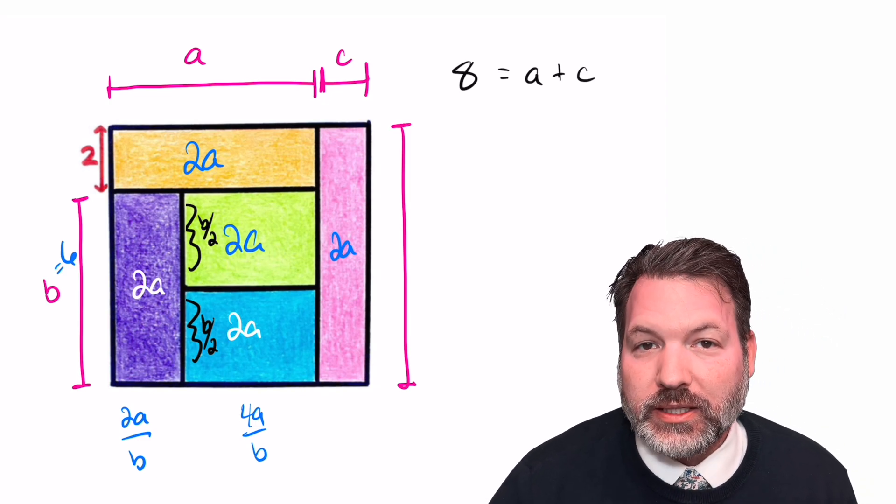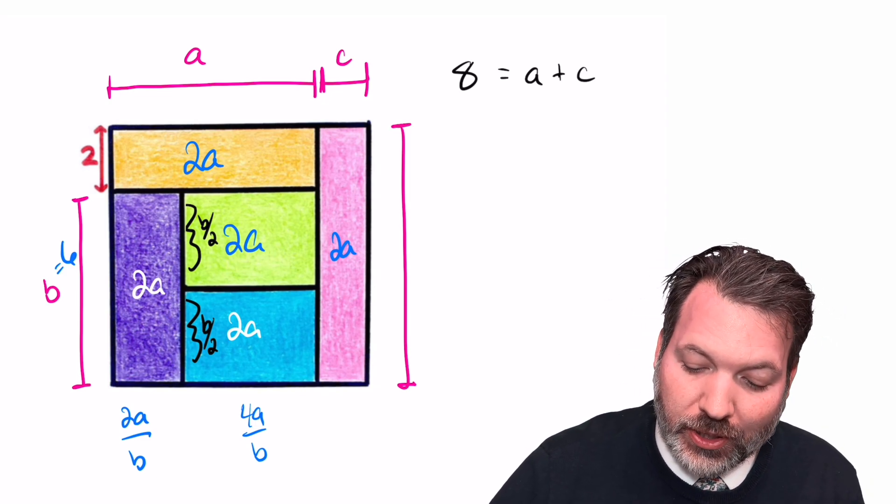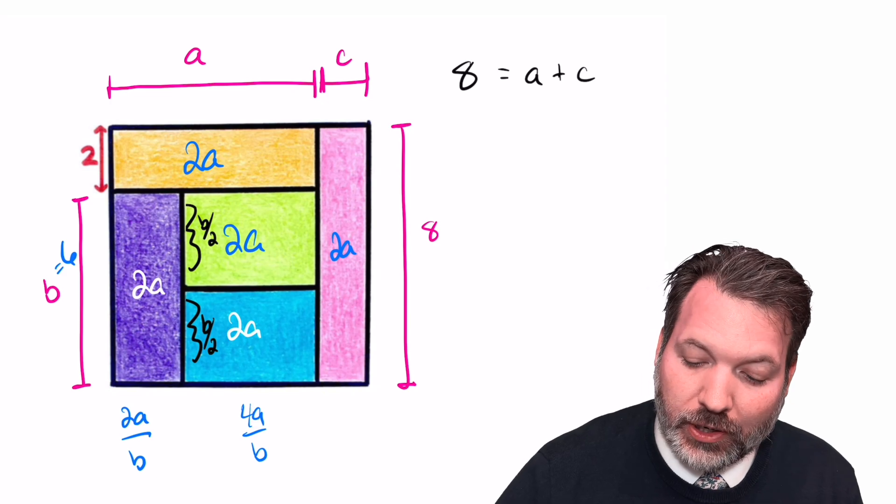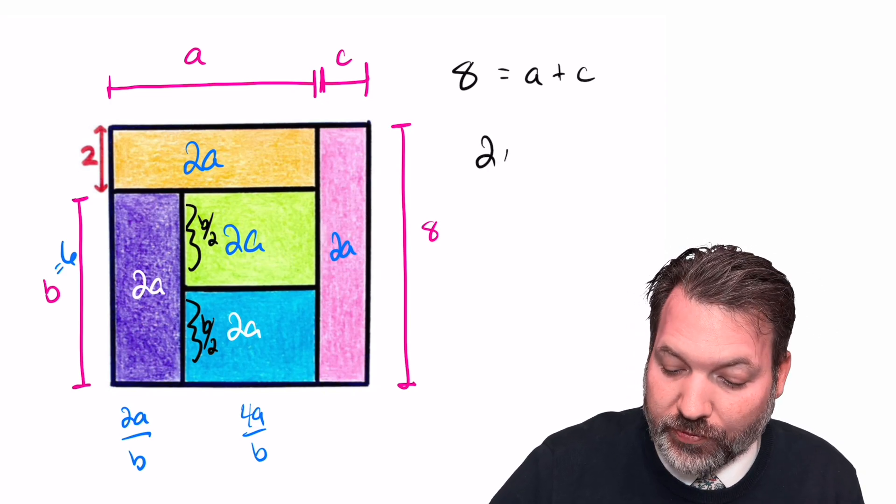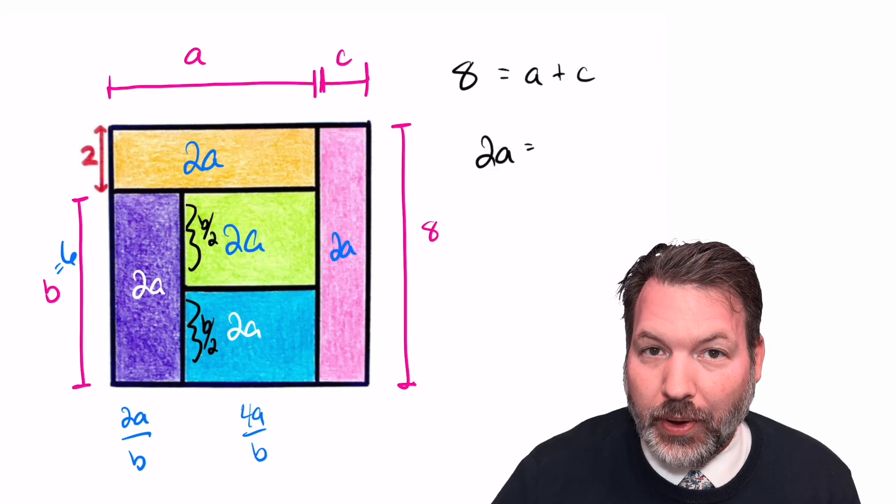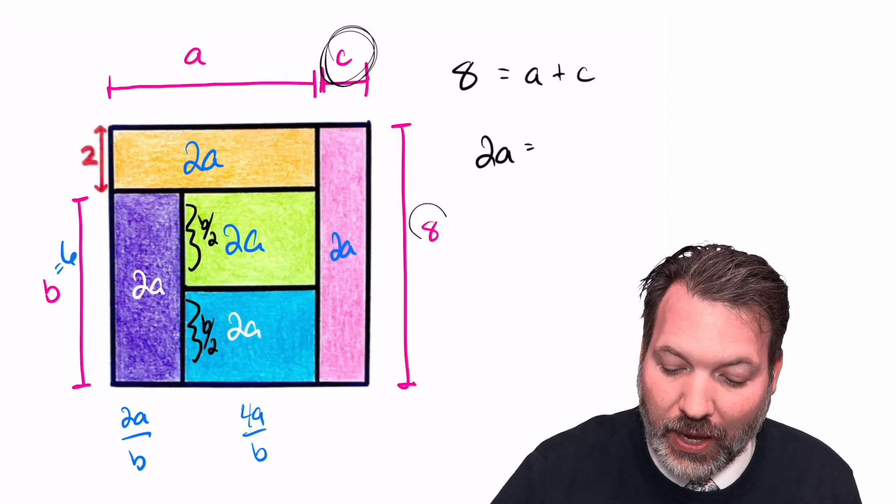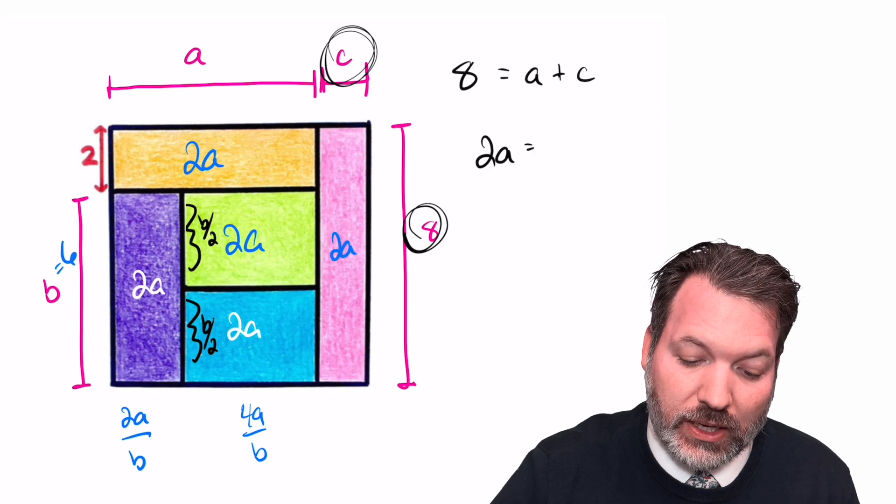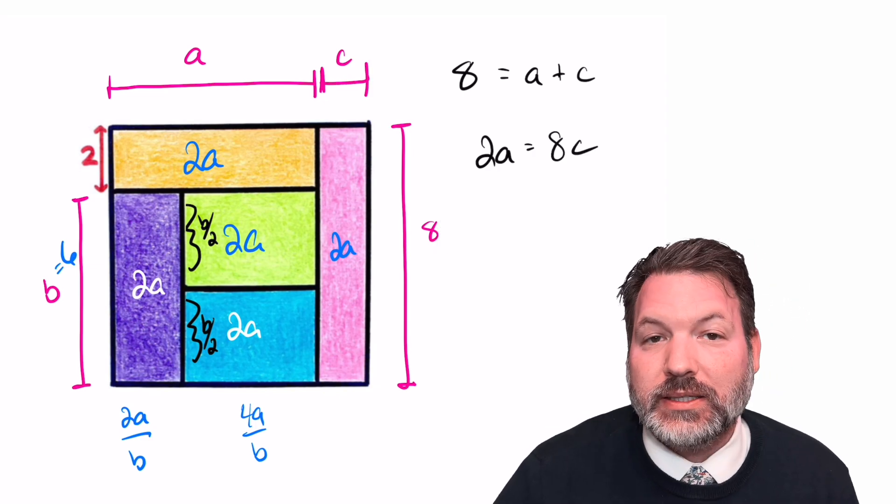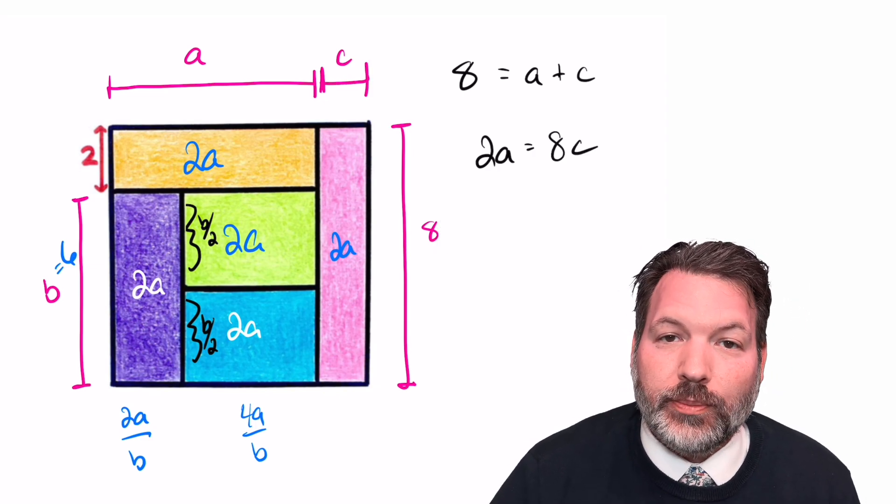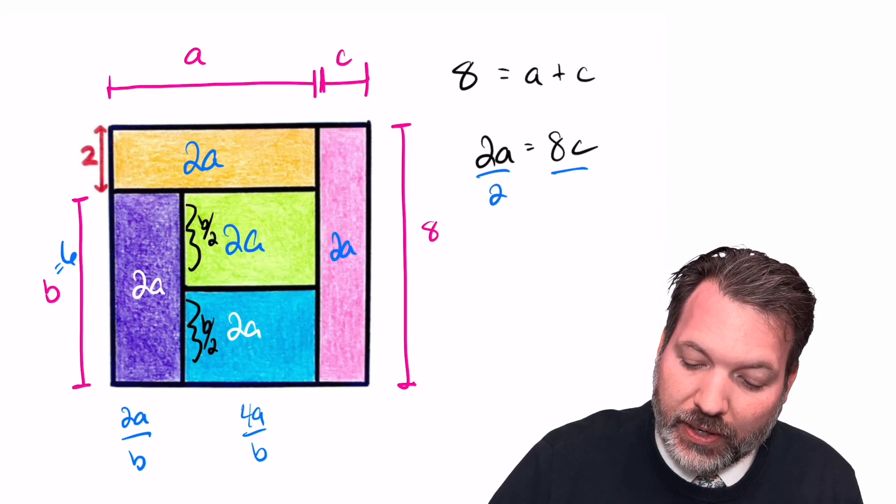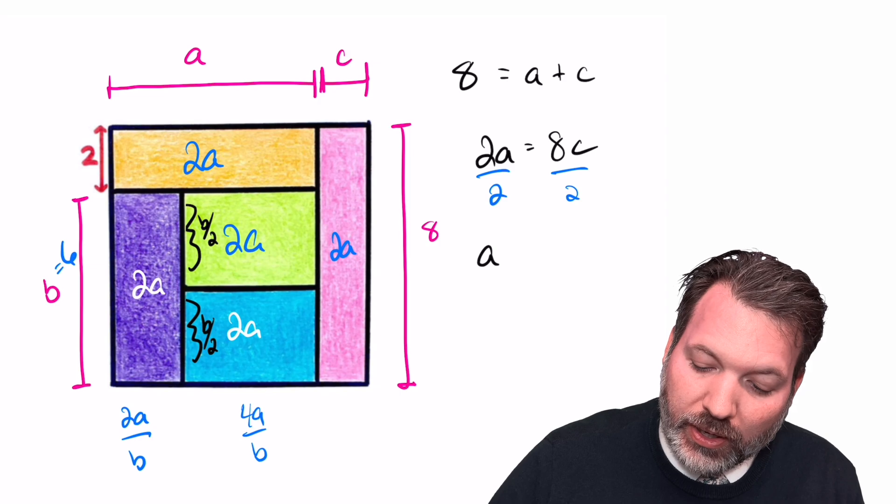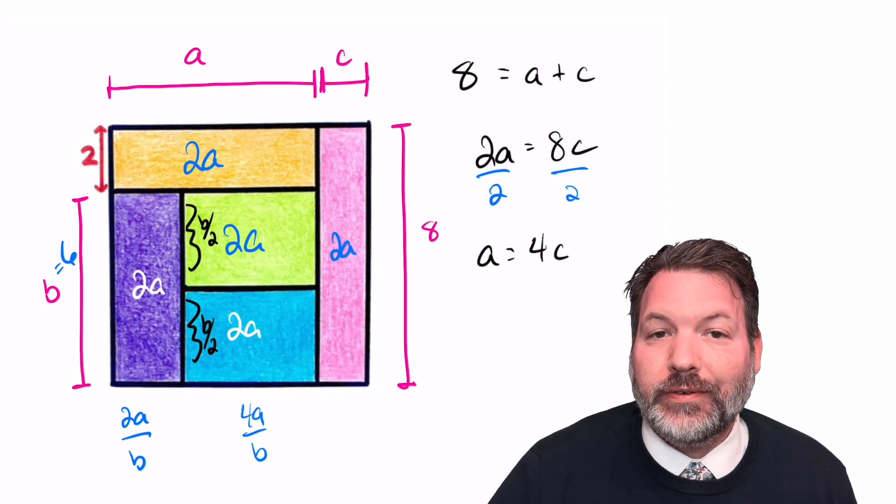Unsurprisingly, let's go to the same length times width equals area relationship to use that piece of information. The area of this pink rectangle off to the right, which of course from the very beginning we've called 2a, also has to be the same thing as length times width: c times 8 equals 8c. So this gives us a relationship between a and c. Specifically, if we divide by 2, we can say that a is equal to 4c.